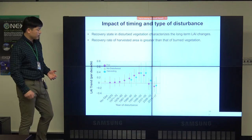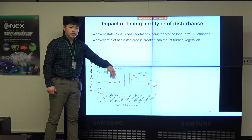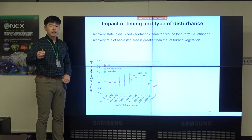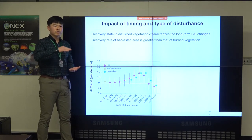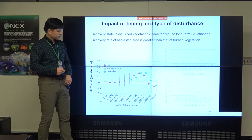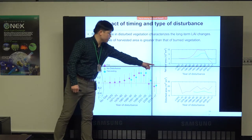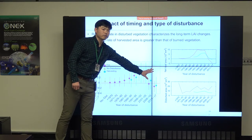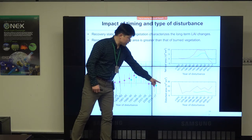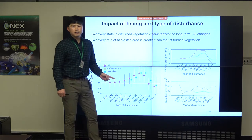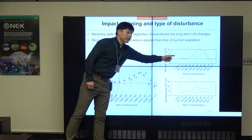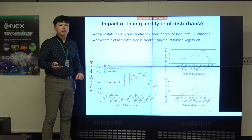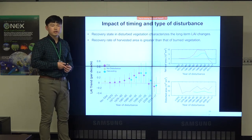An important point is that net leaf area changes are a function of both the rate of change and the total area of vegetation changes. Interestingly, disturbed areas before the 1970s don't really contribute to net leaf area changes. Most net leaf area changes come from recently disturbed areas from about the last 20 years. If there is a disturbance in that timeframe, it really contributes to the net leaf area changes.